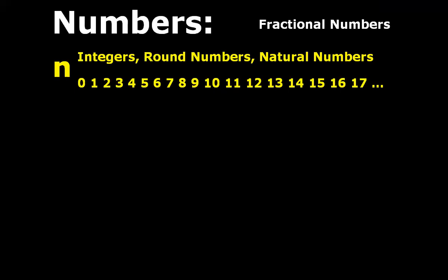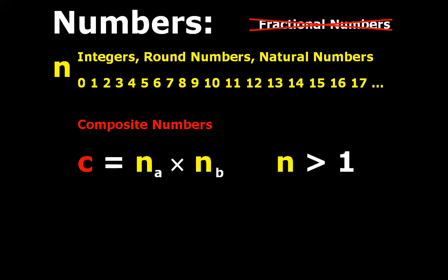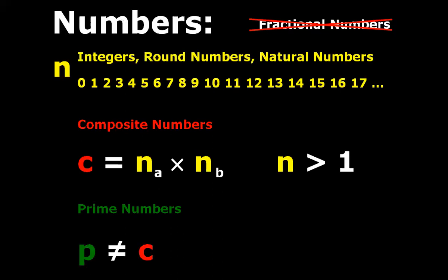We forget about all fractional numbers; they are not important for this video. Next we define composite numbers. Any composite number C is a multiplication of two round numbers. For instance, number 10 is a multiplication of two times five. So this is the formula for any composite number where N has to be higher than one. Since we have defined composite numbers, we can easily define a prime number: a prime number is simply any number that is not a composite number. Prime numbers are the primary numbers and all the other numbers are secondary numbers. That is the main distinction.